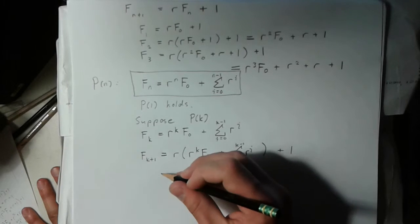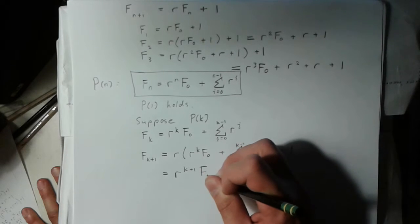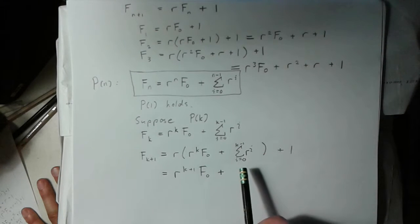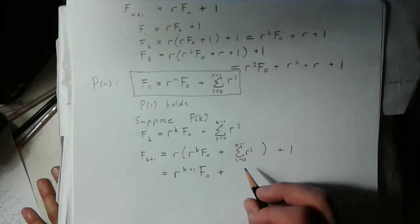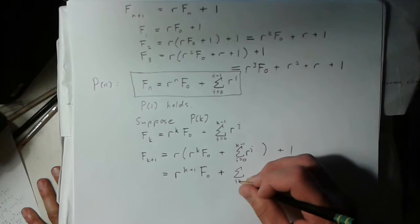So I can just factor this r through here. This is r to the k plus 1 f0. And then here, there's a lot of different ways to think about what's going on here, but since this is just r to the power, multiplying it by r, that's just going to shift our indexes by 1. So I can just shift these indexes by 1.